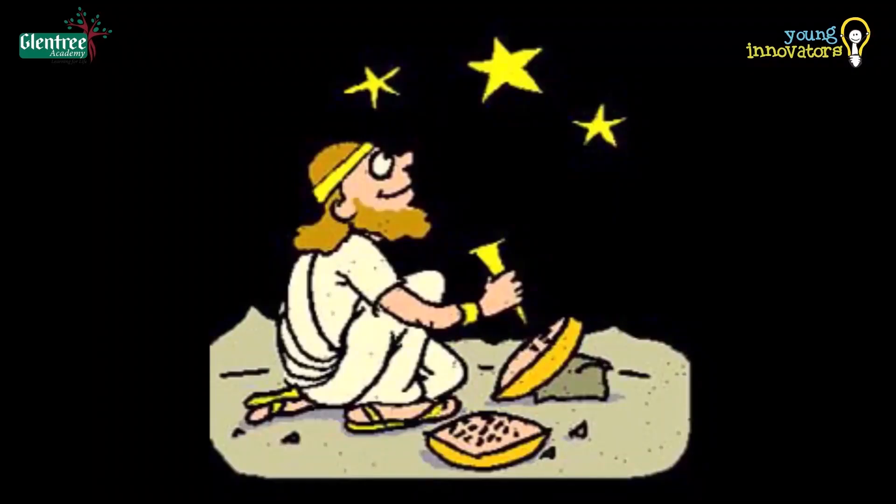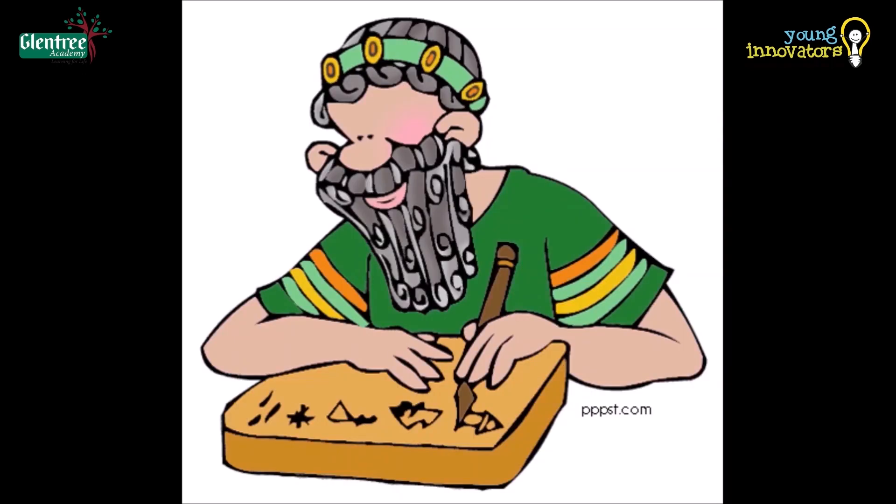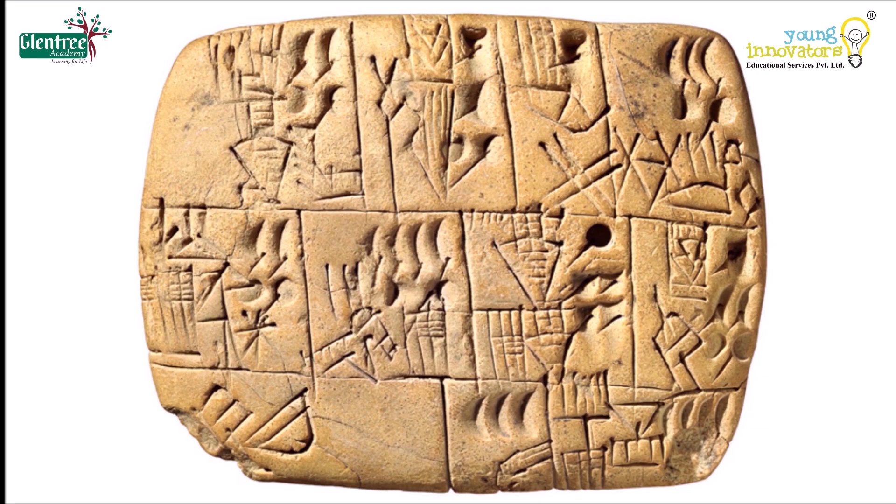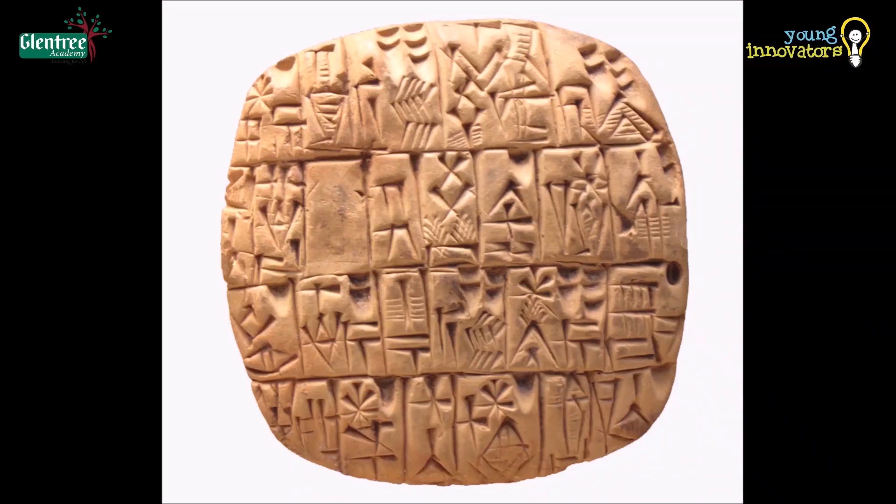Early humans would draw or write what they could see on the rocks or caves as they did not have tools like a pen or a book. They inscribed on the walls or rocks as they observed. Scientists today have found inscriptions and have tried to interpret them.